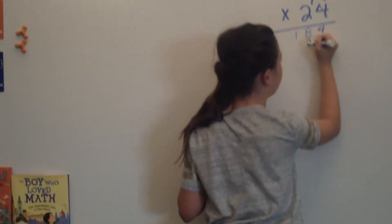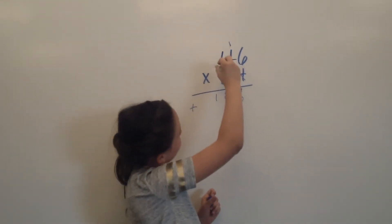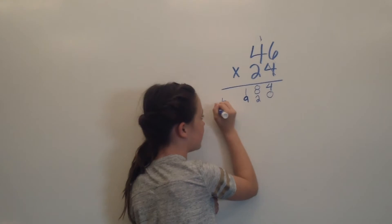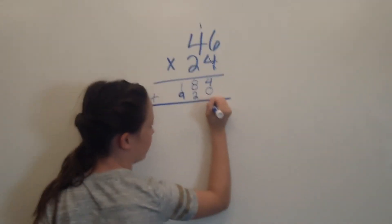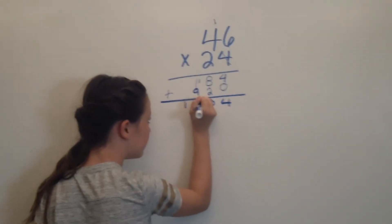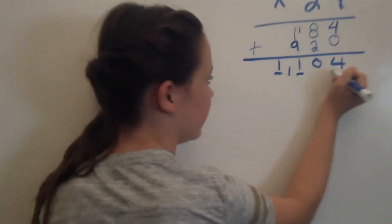Then, you do 2 times 6, which is 12, carrying your 1. Then you do 2 times 4, which is 8, plus 1 is 9. Now you're going to add all your numbers together. 4, 10, 11. The answer to this problem is 1,104.